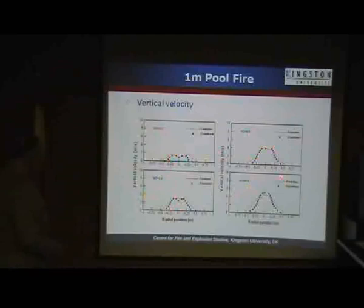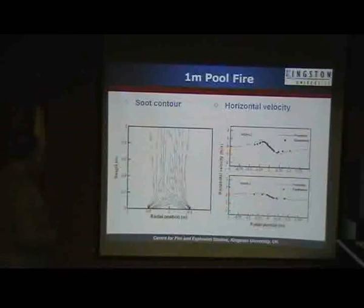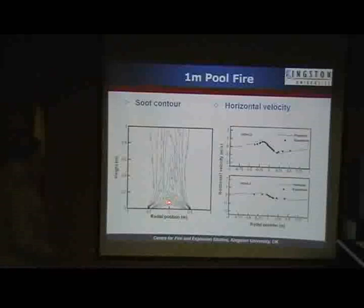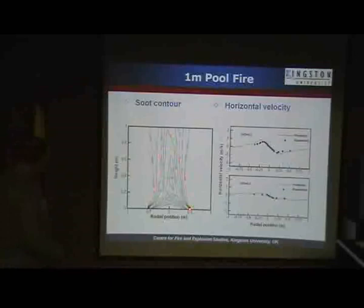Soot contours — I guess this is their theoretical result with no measurements. But it gives some idea of how soot is forming. You can see 0.0005, then nothing, and as you move up you start to get 0.03, and then going away it's 0.02. So you can see the flame is in this region here. Horizontal velocity — pretty good, I think.